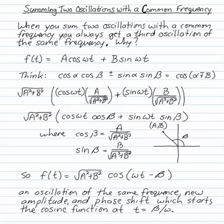When you sum two oscillations with a common frequency, you can always represent that as a single oscillation. It's got the same frequency. Why is that the case?